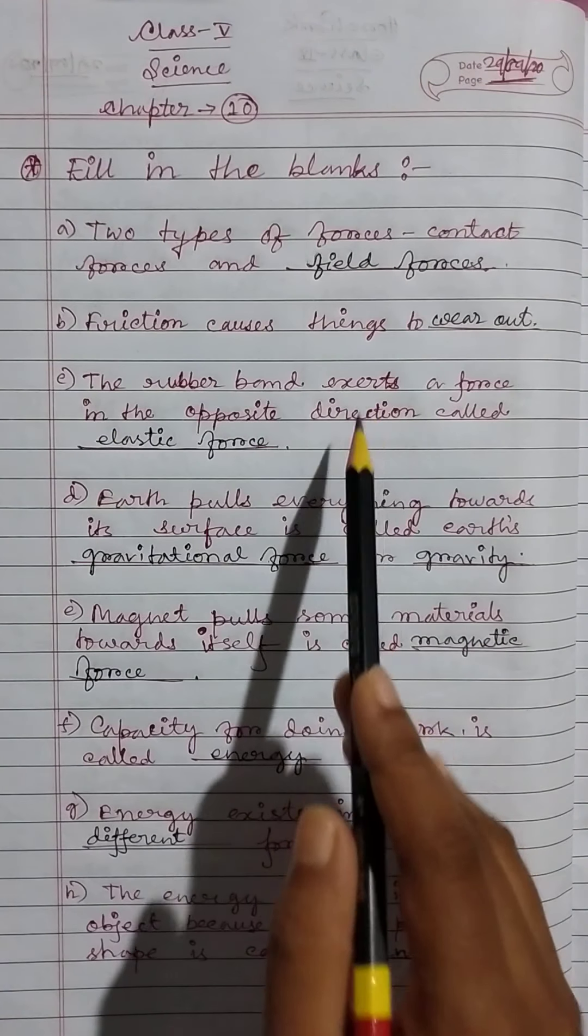Earth pulls everything towards its surface; this is called gravitational force or gravity. Magnet pulls some materials towards itself; this is called magnetic force. Capacity for doing work is called energy. Energy exists in many different forms.